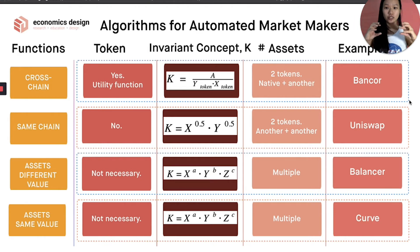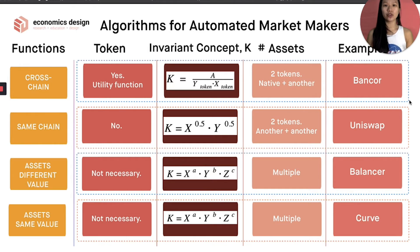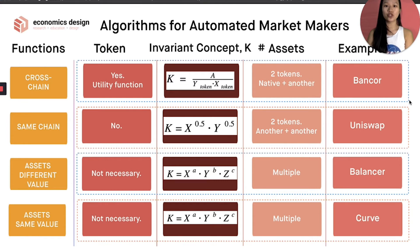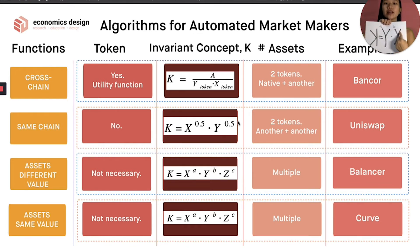The second model is same-chain. You don't need a separate token because something already connects both assets on the same chain — in Ethereum's case, that's ETH. Creating a new token just means you'd need to build liquidity and network effects for it, which is unnecessary hassle. So a very simple concept applies: K equals x times y. I show 0.5 and 0.5 weights to illustrate the 50-50 balance between the two tokens, though mathematically it simplifies to K equals x times y.